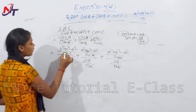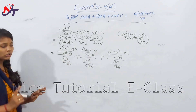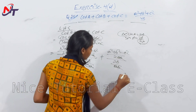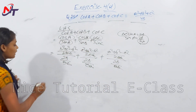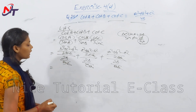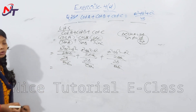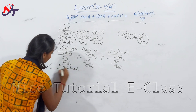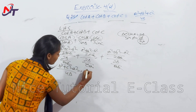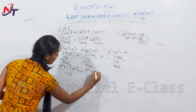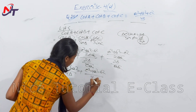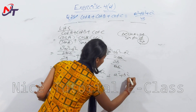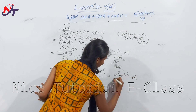After bc and ca and ab cancel in numerator and denominator respectively, cot A = (b² + c² - a²)/(4Δ). Similarly cot B = (c² + a² - b²)/(4Δ) and cot C = (a² + b² - c²)/(4Δ).